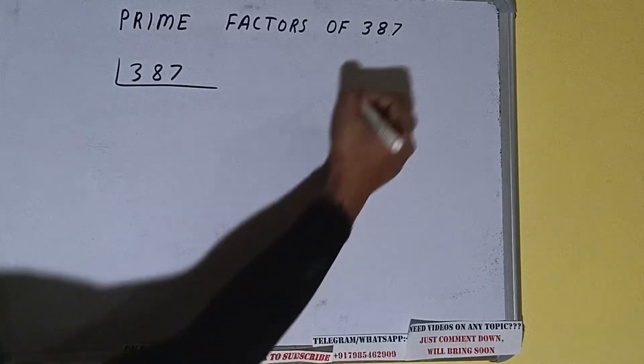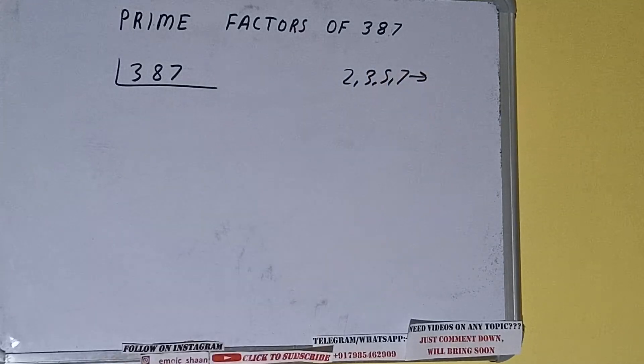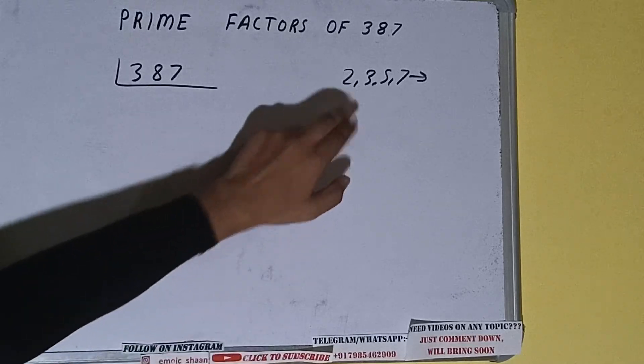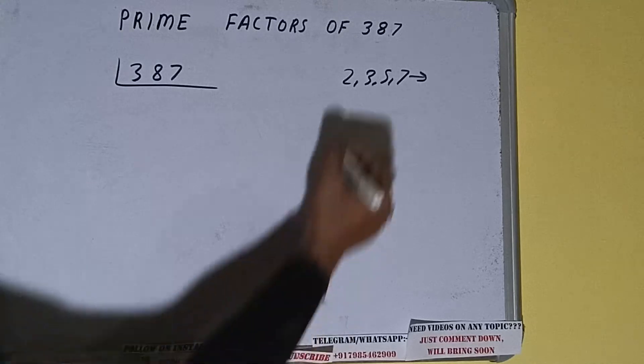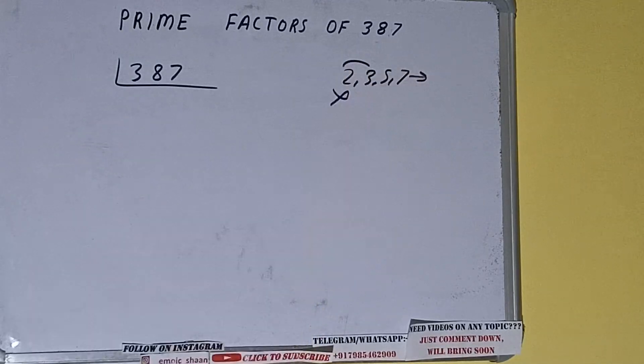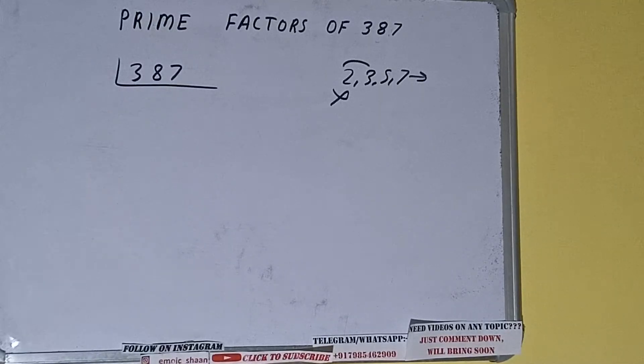All right, so we'll be checking with the lowest prime number we have, that is 2. Is the number 387 divisible by 2? Clearly not, because the number is odd. So we'll be checking with the next lowest prime number, that is 3. Is the number 387 divisible by 3? We need to check: 3 ones are 3, 3 twos are 6, 27. It is divisible by 3, so let's divide.